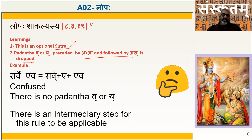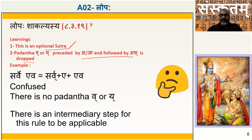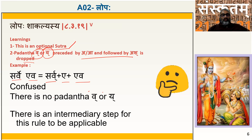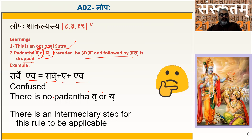The biggest confusion starts where we defined 'Sarvae Eva' as Sarvaa plus A plus Eva, because neither Yoho nor padanta Va is visible, and there is no akarantam — so how does the Lopaha happen? Do not get confused. Before this rule becomes applicable there is an intermediary step, which we will see in the next slide.